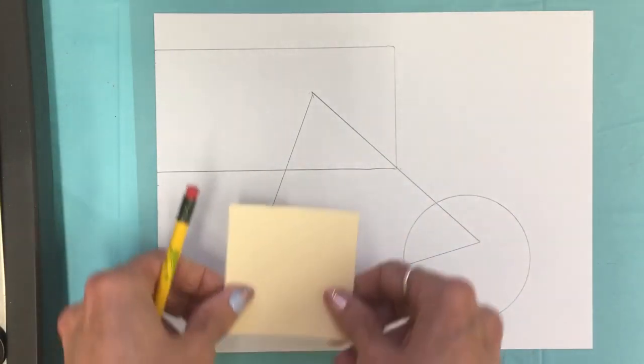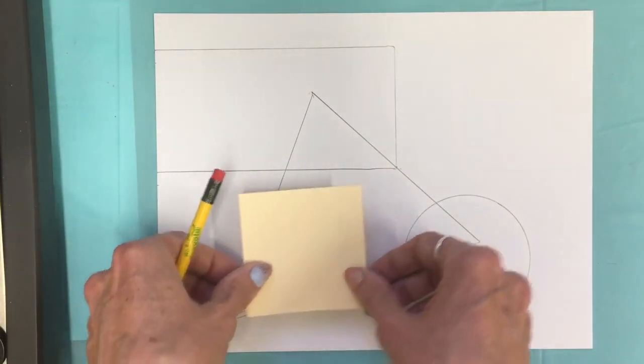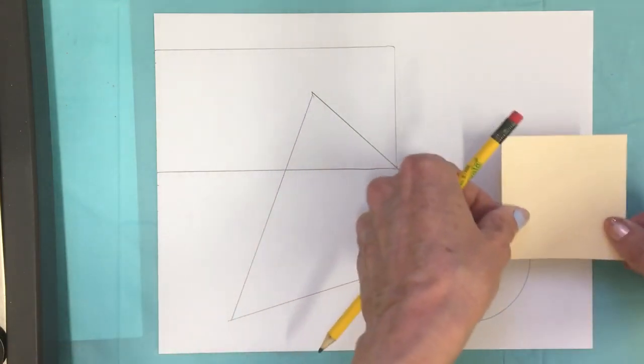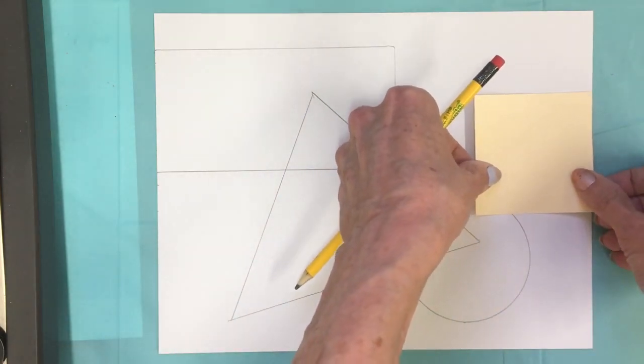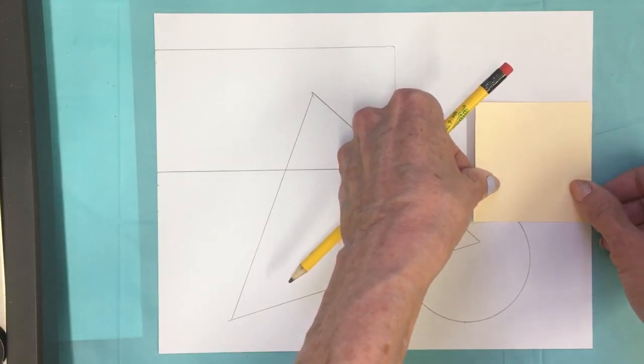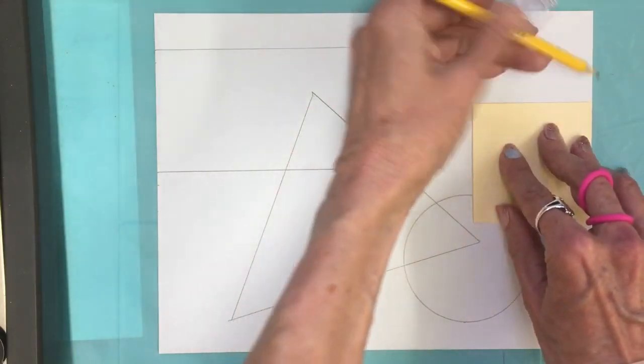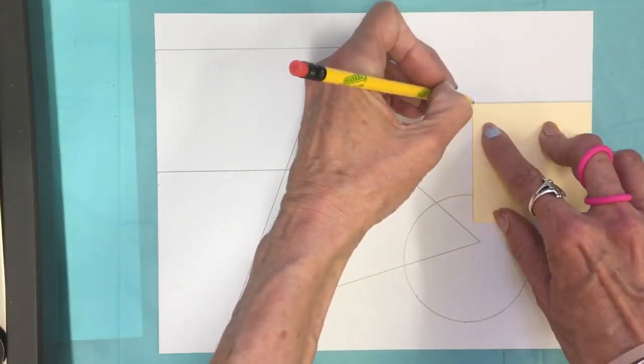I like to have all of my shapes overlapping or touching where I can. Maybe I could add, don't want those shapes to get too small. Maybe I'll add a square here.